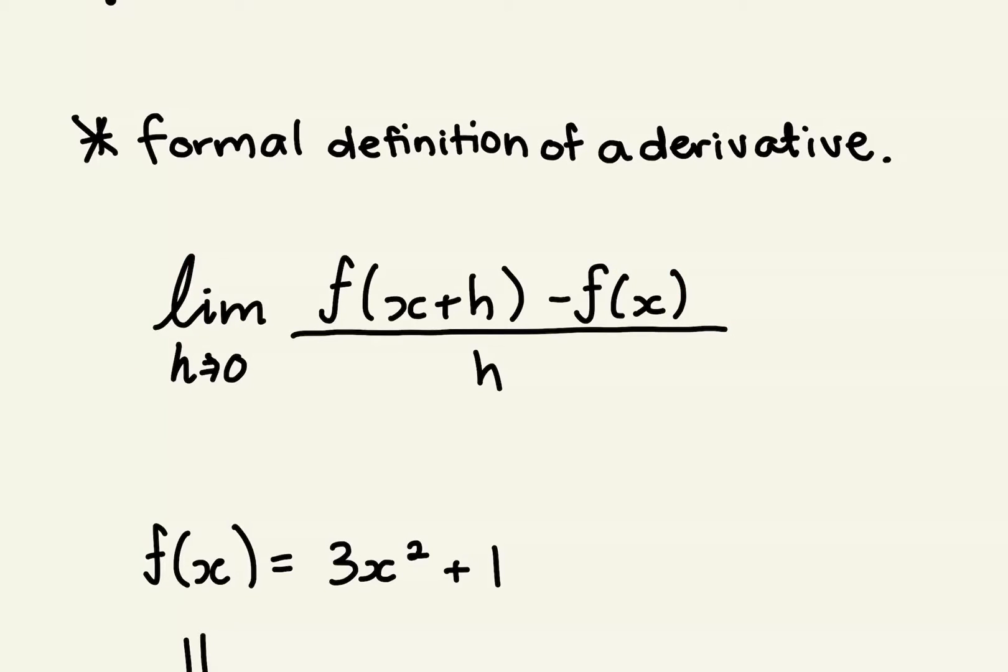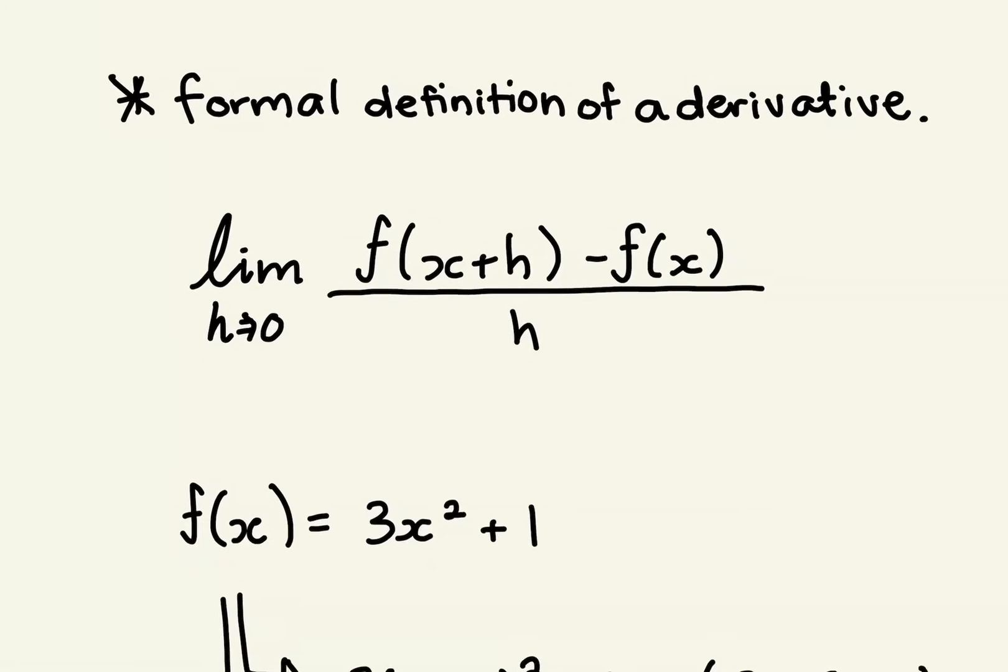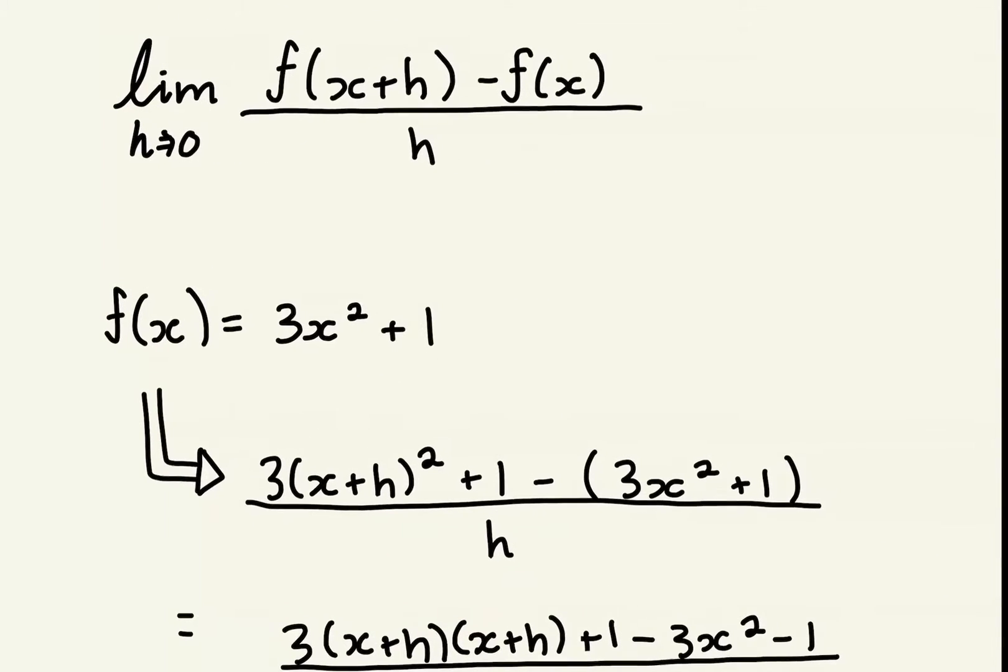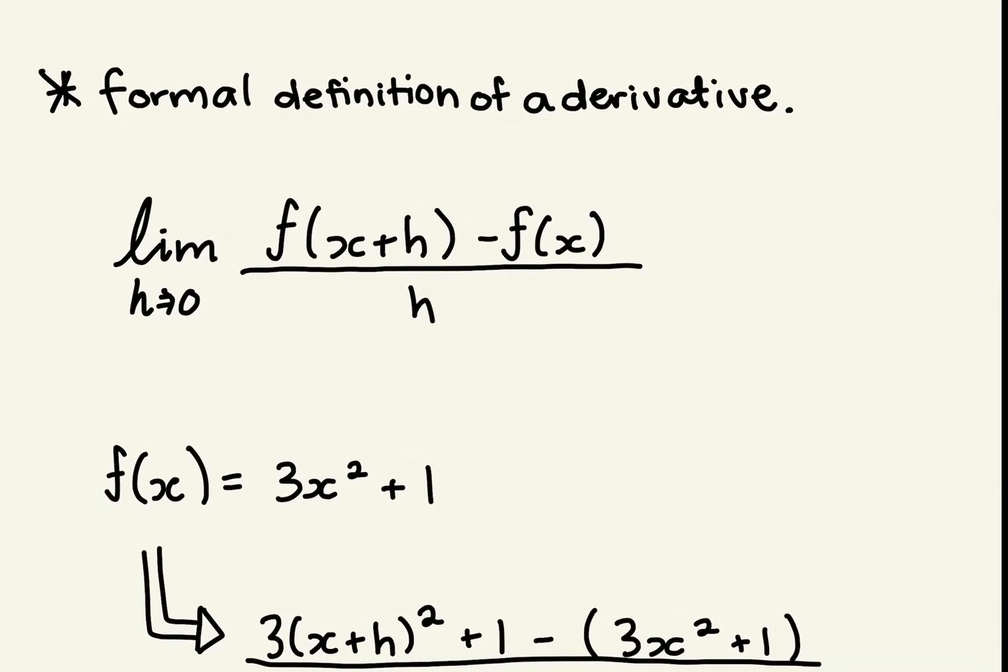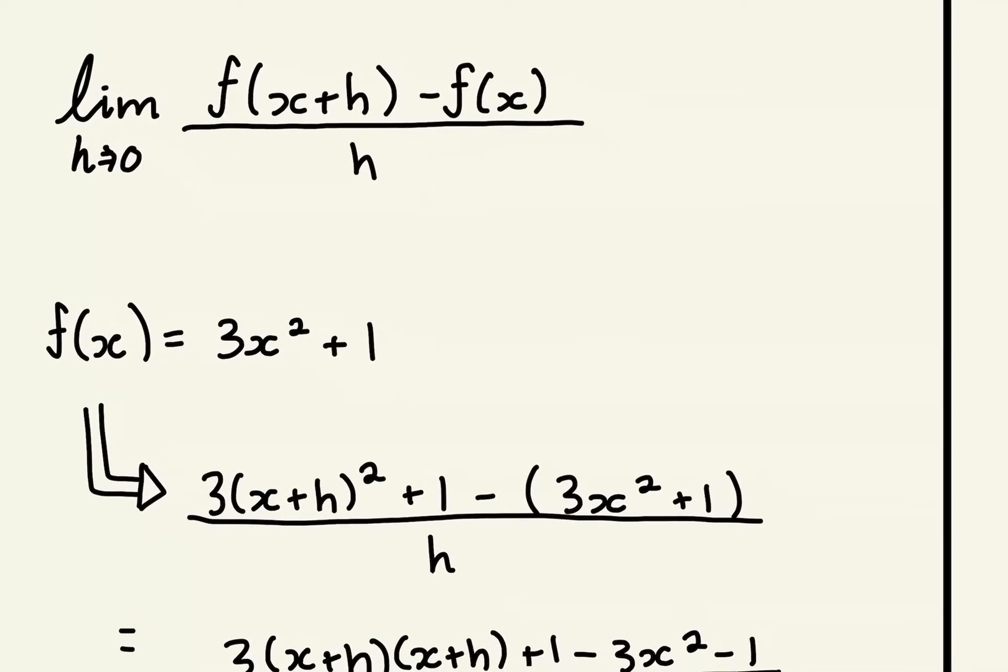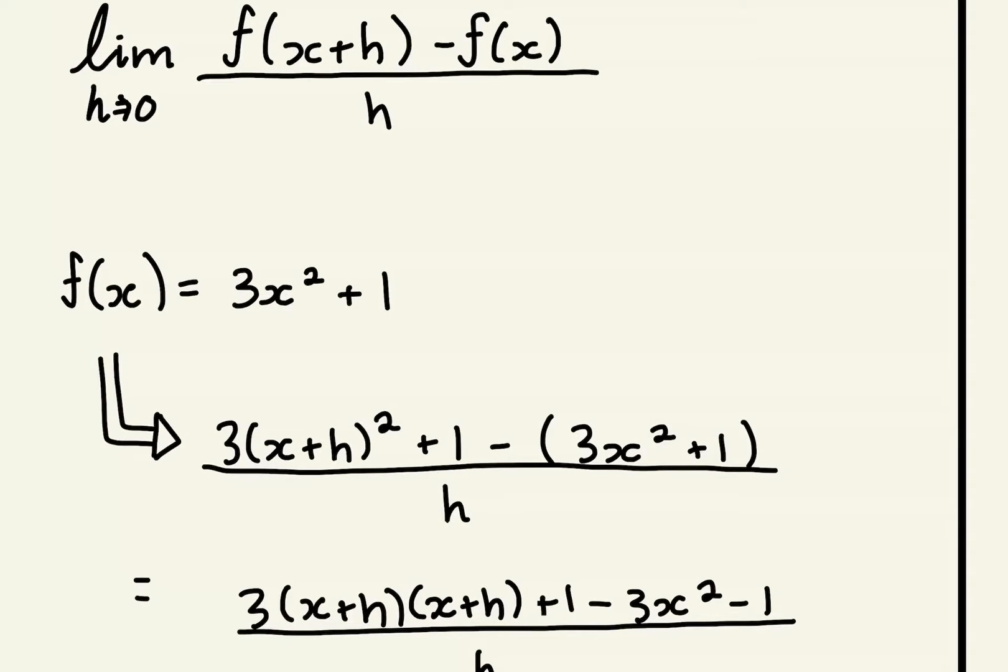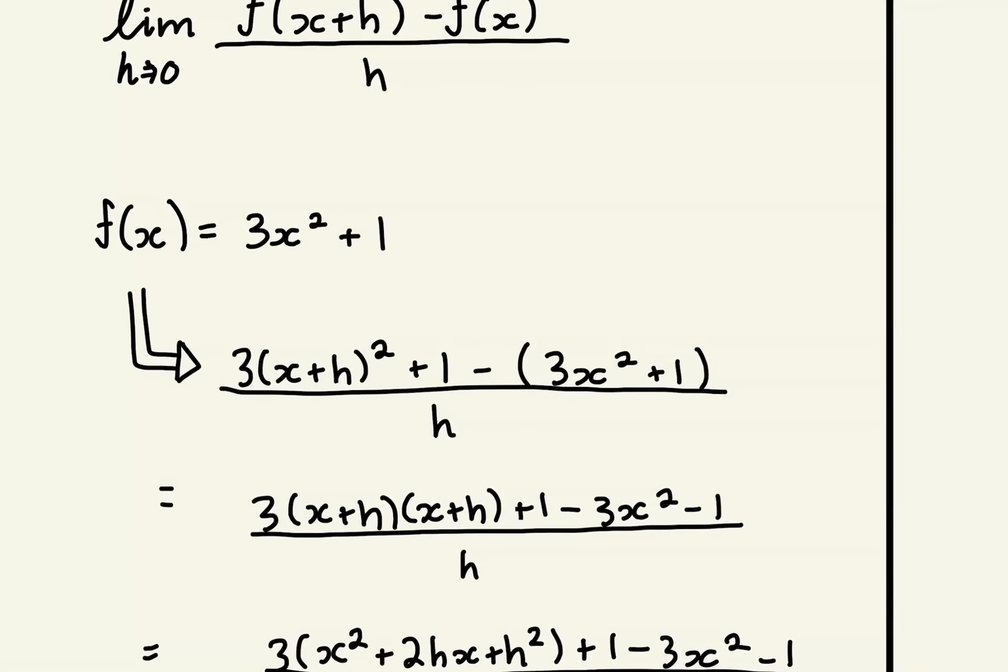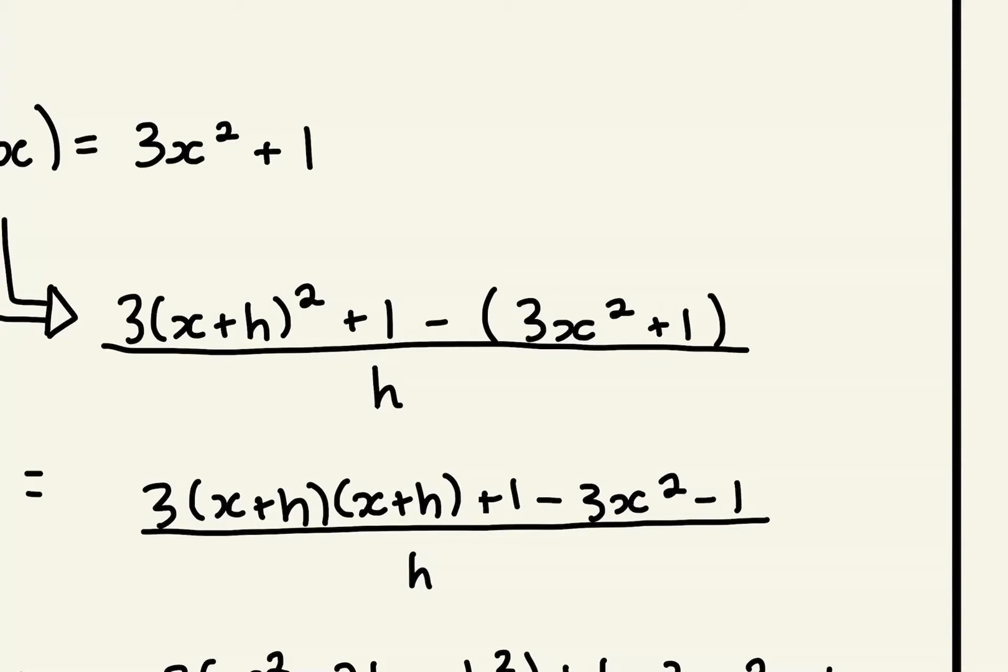You can see that if we actually use this to get a derivative, let's say we have the function 3x² + 1 and we use that to differentiate 3x² + 1, we're gonna go ahead and plug it in. So we're gonna have 3(x+h)² + 1 minus (3x² + 1), and then when you simplify that, you can spread the negative over, foil out all that.